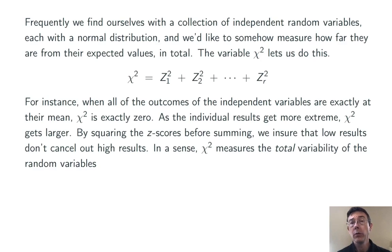When all of the individual z-scores are zero, all the individual results are right at their mean, and chi-squared is going to be exactly zero. As those individual results get further from their mean, chi-squared gets larger.